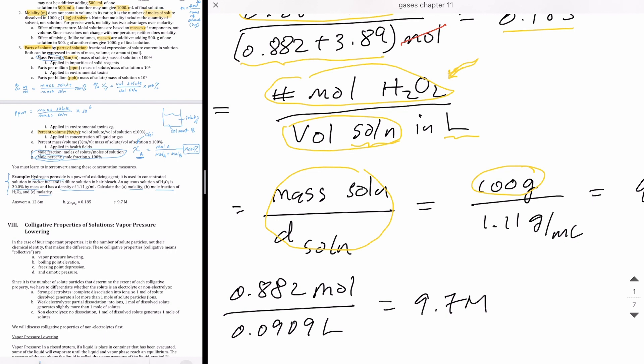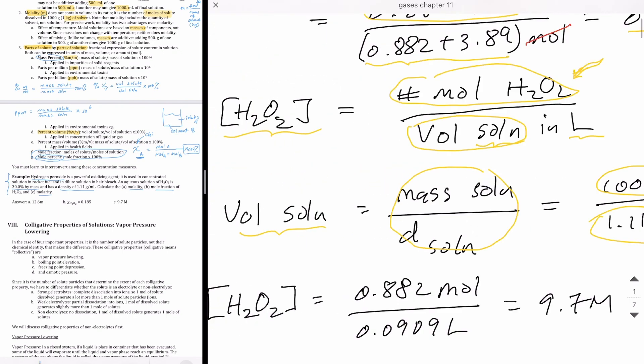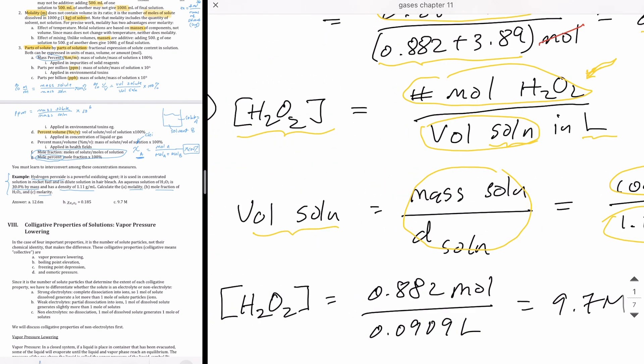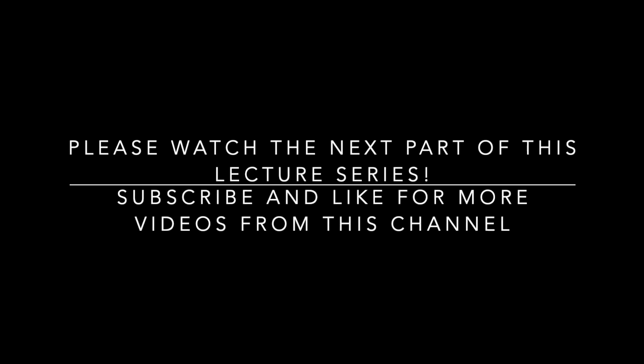which is 100 grams. And then divided by the density, which is 1.11 grams per mil, and we get 90.9 mil. Or converting that to liter is 0.0909 liter. Calculating molarity, of course, has to divide the number of moles by that volume. And so we get 9.7 molar in the solution.